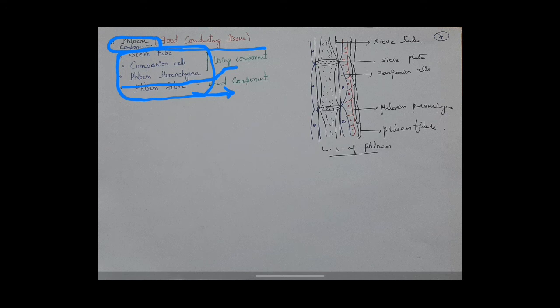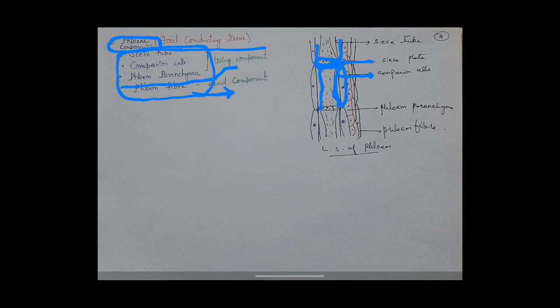Sieve tubes are very elongated tube-like cells placed end to end. The wall present adjacent to the sieve tube is perforated, and that is called the sieve plate. The food particles move from one tube to another by the sieve plate. Adjacent to the sieve tube are lens-shaped cells called companion cells, which control the activity of the sieve tube.